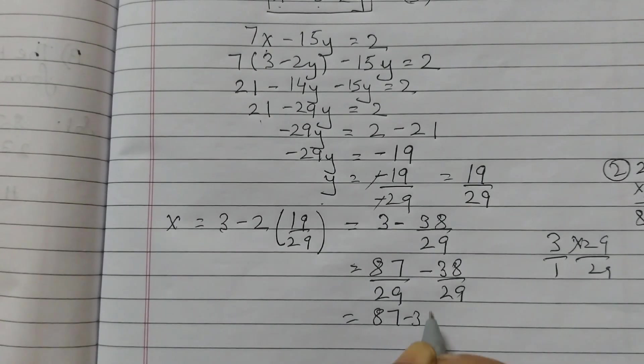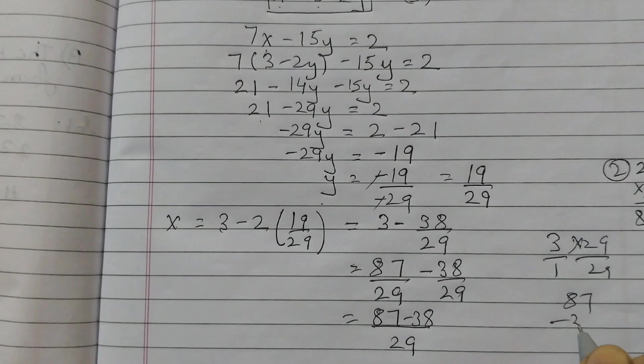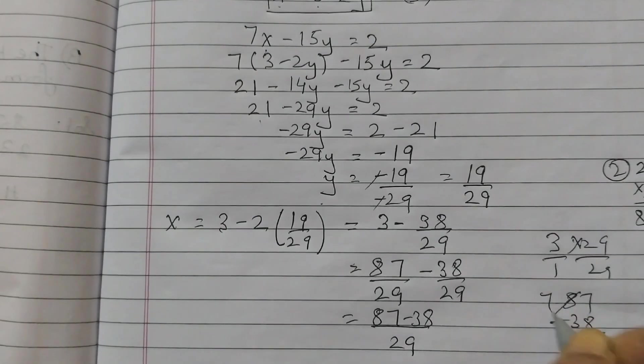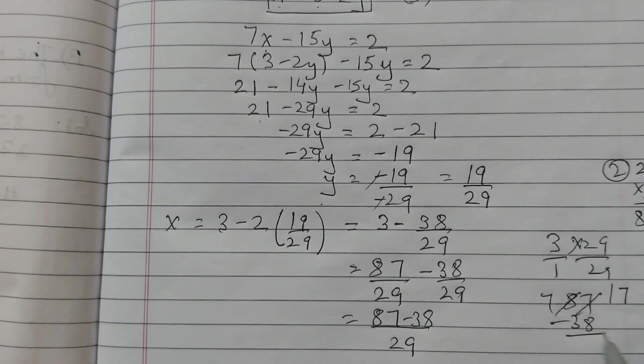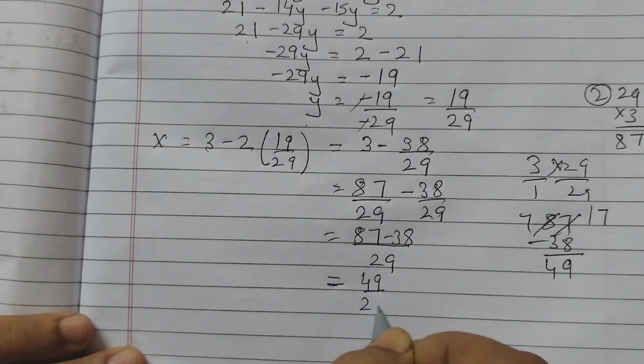So now 87 minus 38 by 29. 87 minus 38: 7, 17, 9, 7 minus 3, 4. That equals 49 by 29.